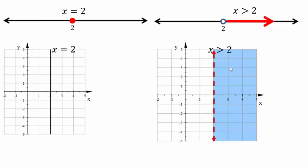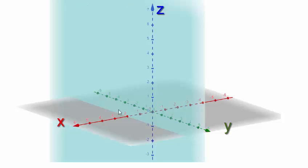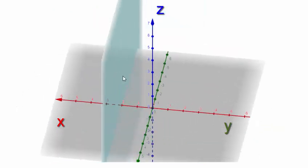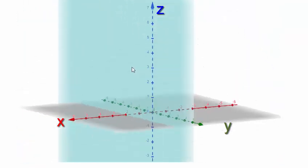In three dimensions, what does x equals 2 mean? The red axis is the x-axis, green is the y-axis, and blue is the z-axis. X equals 2 would mean this plane — all points on this plane where the x-coordinate is 2. Y can be anything, and z can be anything, so you can go front and back and up and down. So x equals 2 represents this plane in three-dimensional space.